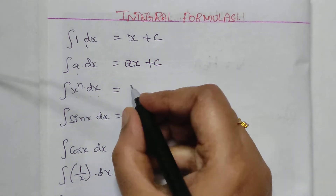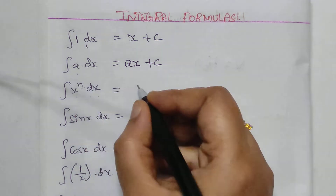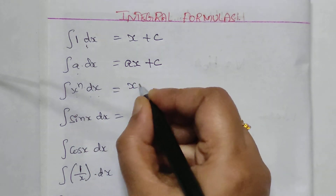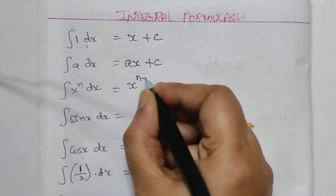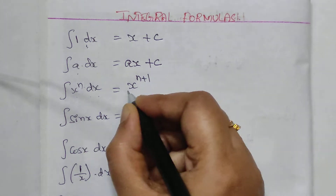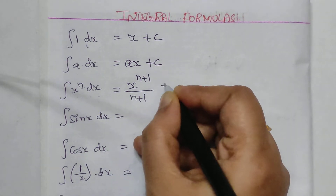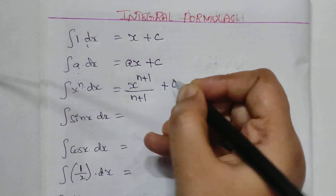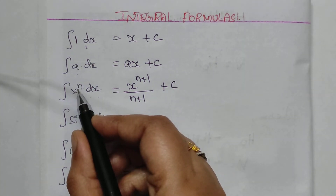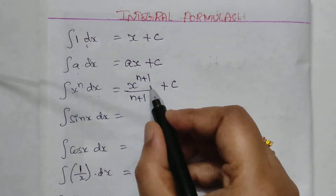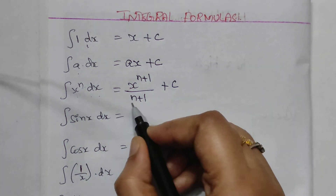The next one is the integral of x power n dx. Here we have power n, so the result is x power n plus 1, divided by n plus 1, plus constant C.